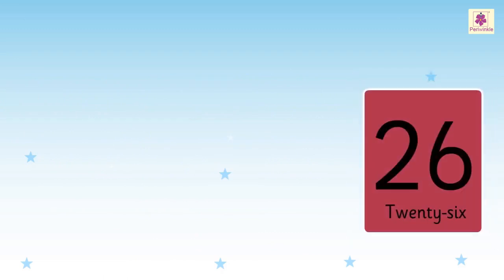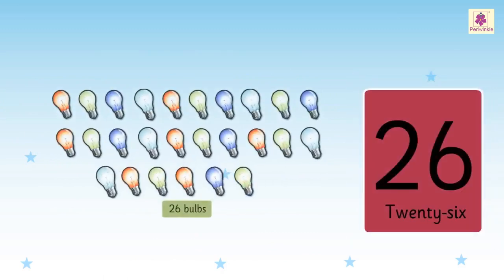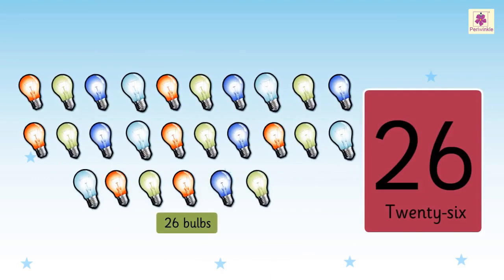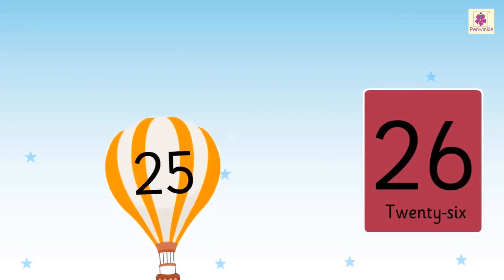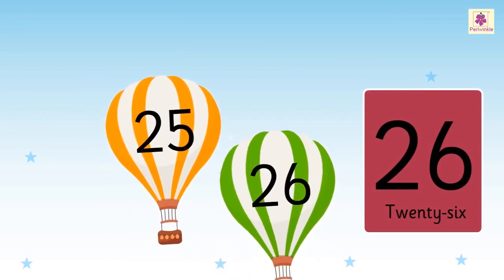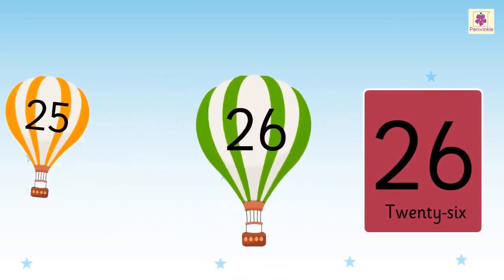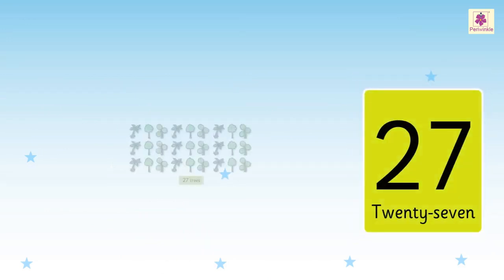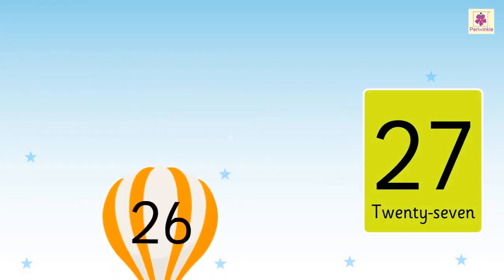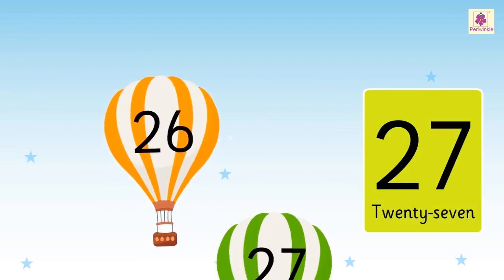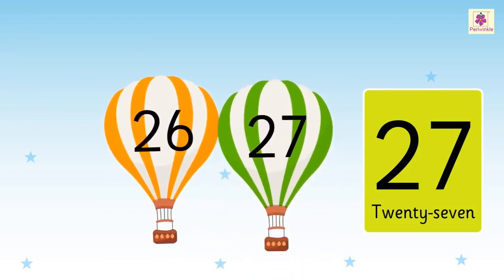Number 26, here we can see 26 bulbs. 26 comes after 25. Number 27, here we can see 27 trees. 27 comes after 26.